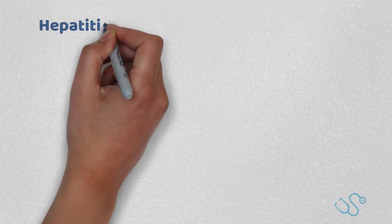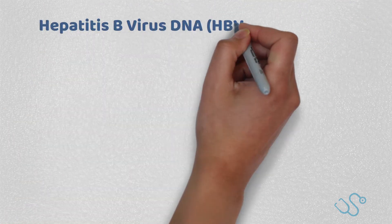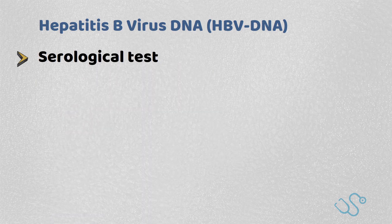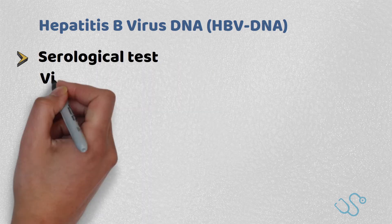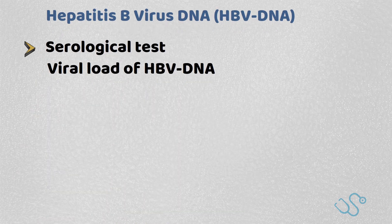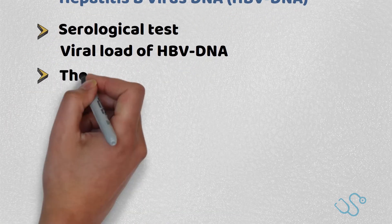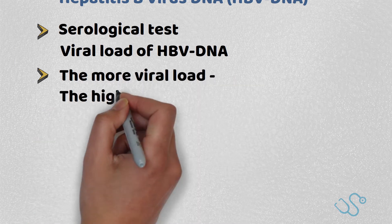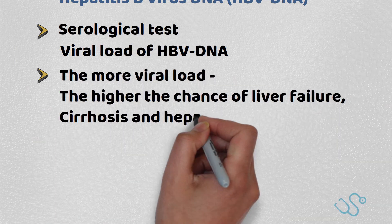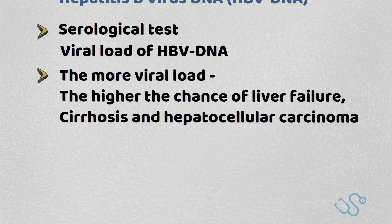Hepatitis B viral DNA. This is the viral load of Hepatitis B DNA. In simple terms, the higher the viral load, the greater the chance of liver failure, cirrhosis, and hepatocellular carcinoma.